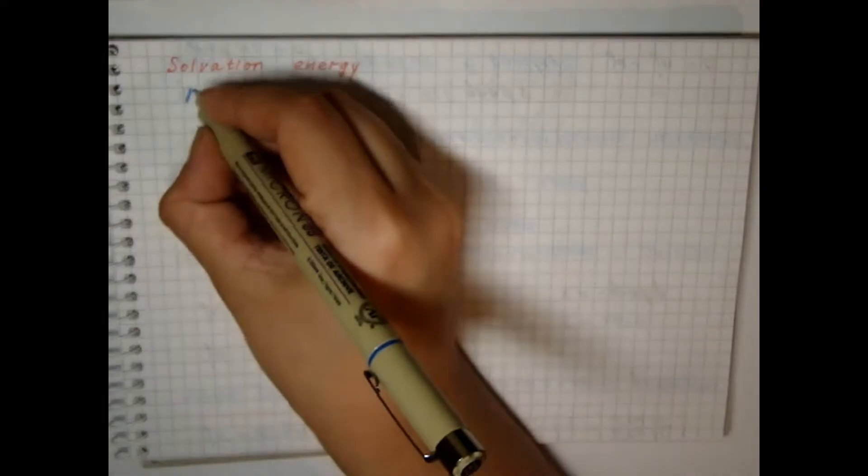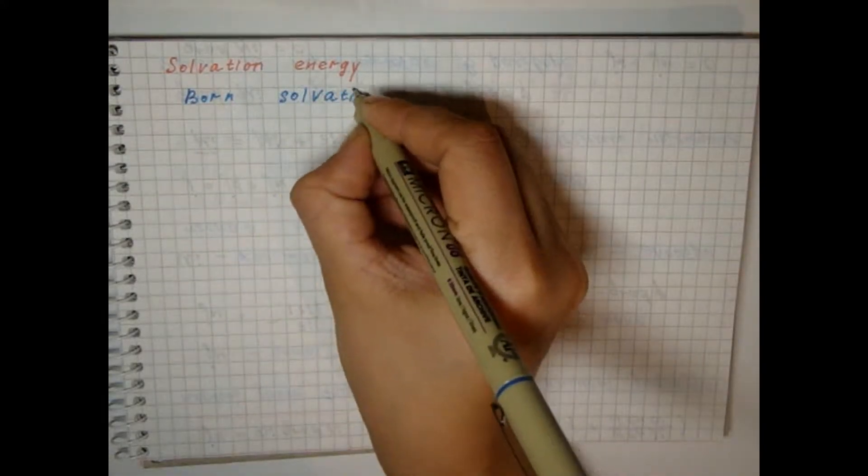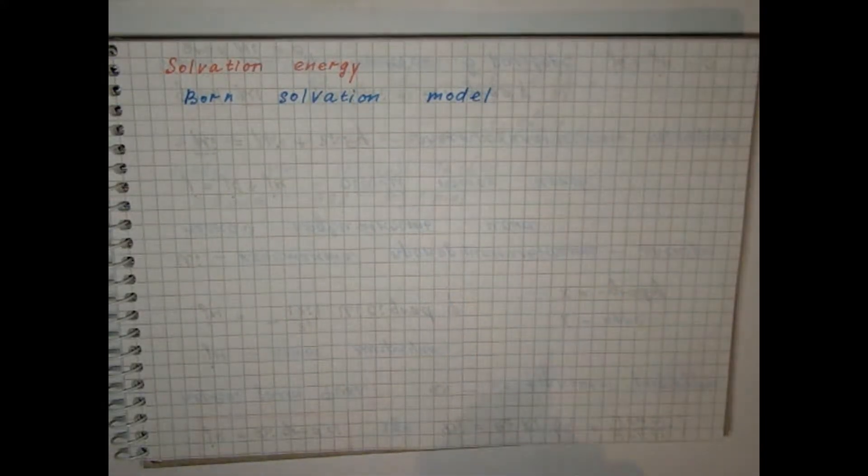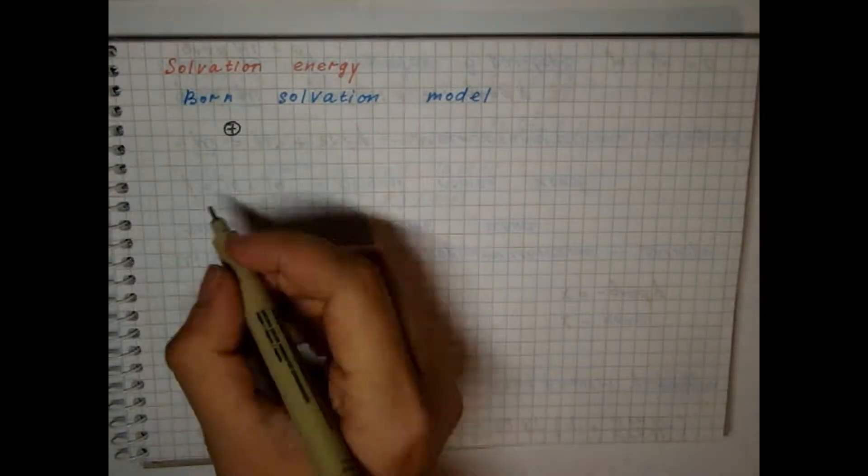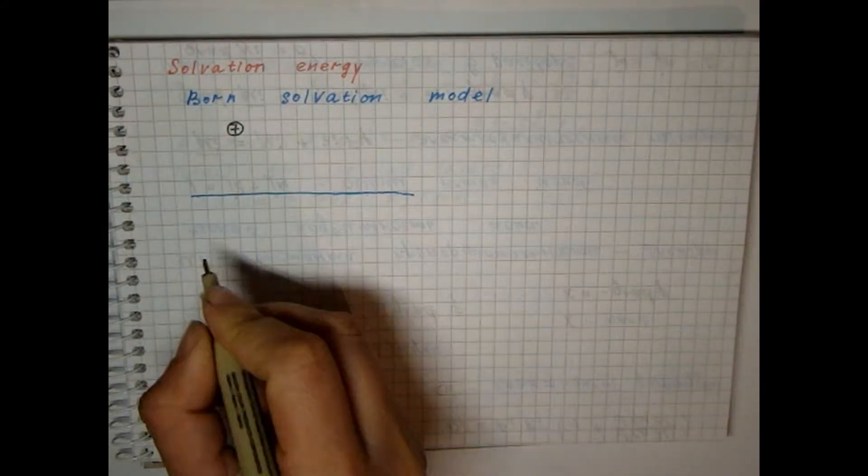Electrostatic interaction is neglected. The simplest model for estimating the solvation energy was proposed by Born. According to this model, an ion is considered as a charged ball and the solvent is a medium with a dielectric constant epsilon.